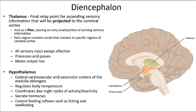The diencephalon contains the hypothalamus and the thalamus, and serves as the structural and functional link between the cerebral hemispheres and the rest of the central nervous system. This region is completely covered by the cerebrum, making it not visible through external examination. The thalamus forms the superior lateral walls of the third ventricle and is composed of masses of gray matter. It contains important relay and processing centers for sensory information — almost all sensory input passes through the thalamus, with the exception of olfaction, which is why the thalamus is sometimes called the gatekeeper.